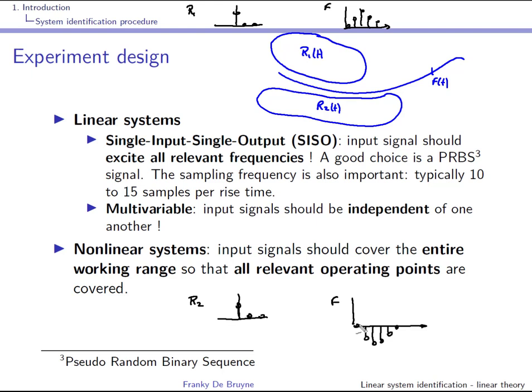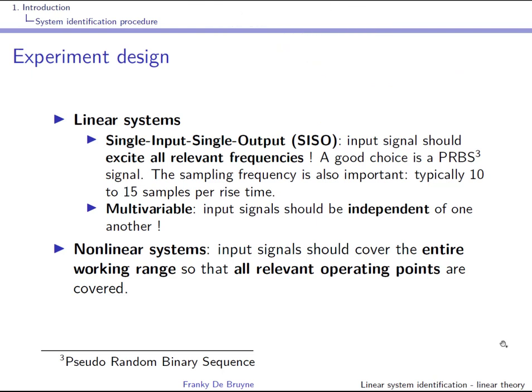For this rain-river system it is impossible to do actual experiment design because you have to live with the data nature gives you. For an industrial process, you would design the experiment so that the two inputs behave independently. If the system becomes non-linear, things become much more difficult — the input signals should cover the entire working range so that all relevant operating points are covered.